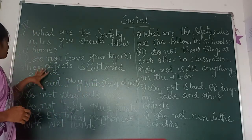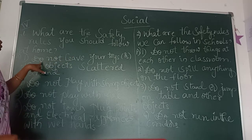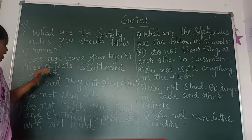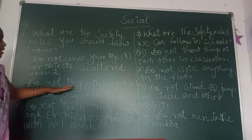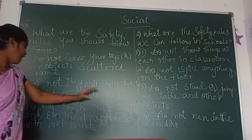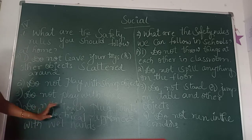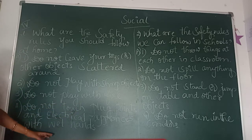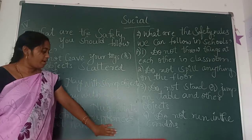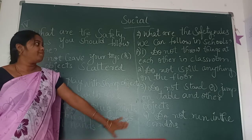Let me repeat again. One: do not leave your toys and other objects scattered around. Two: do not play with sharp objects. Three: do not play with fire. Four: do not touch phones and electrical appliances with wet hands. These four are the main points we have to follow at home.